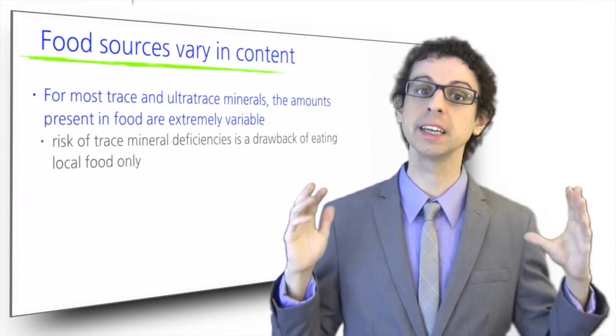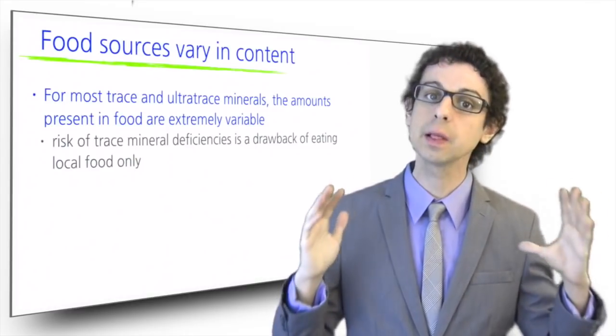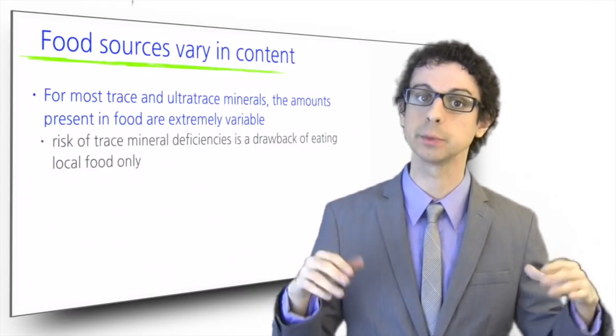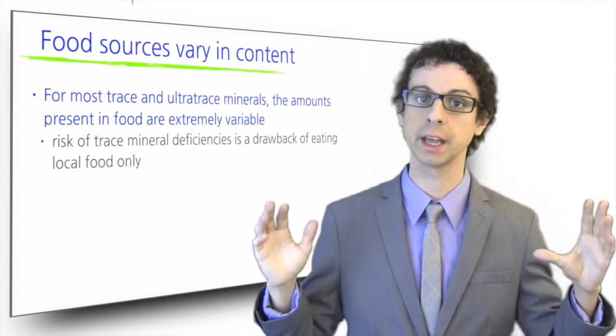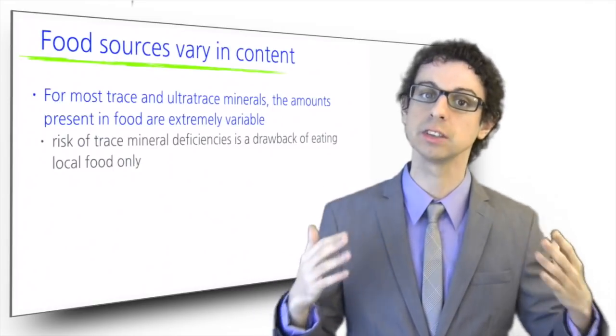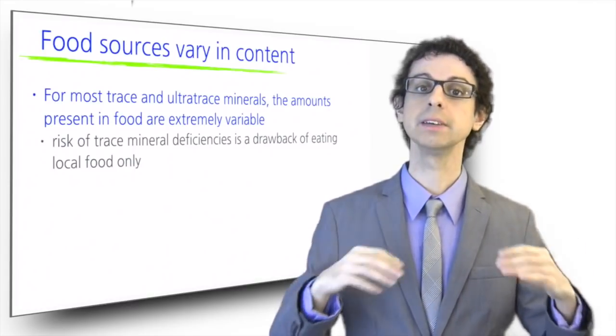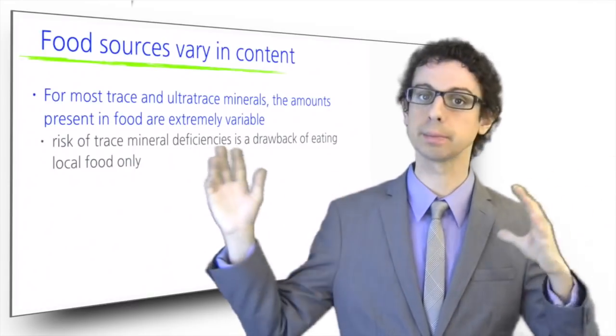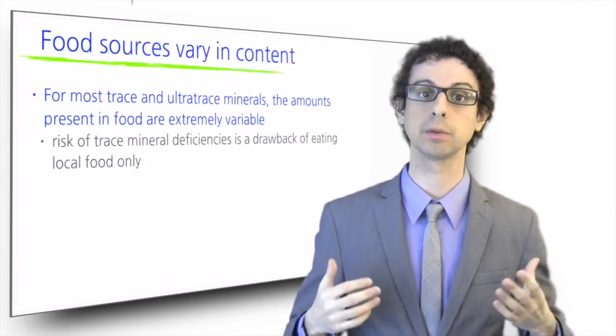Another big risk with eating local only is environmental contamination. If the local soil is contaminated with a toxic compound, this will reflect in the whole food chain, and so we keep getting the same contaminant, and it is much easier to accumulate it to dangerous levels. Conversely, if we eat food coming from many different places, these effects tend to cancel out for the principle of variety.